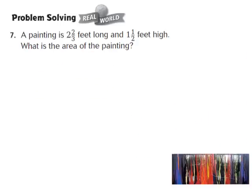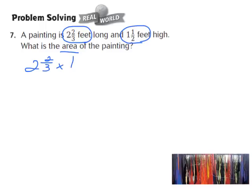Now let's look at question number 7, another real-world problem. A painting is 2 and 2/3 feet long and 1 and 1/2 feet high. What is the area of the painting? Area is length times width, so we multiply 2 and 2/3 times 1 and 1/2. Step 1: rewrite as 2 plus 2/3, and 1 plus 1/2.